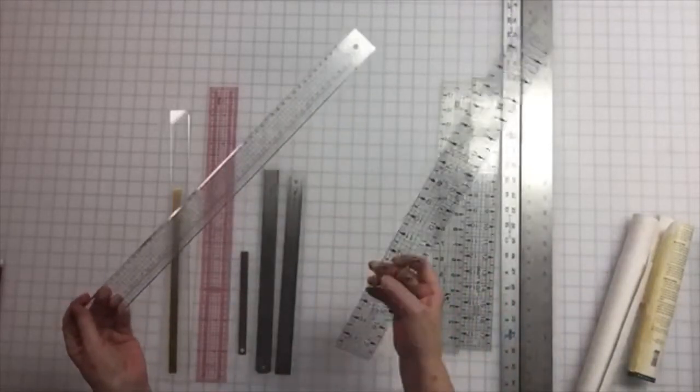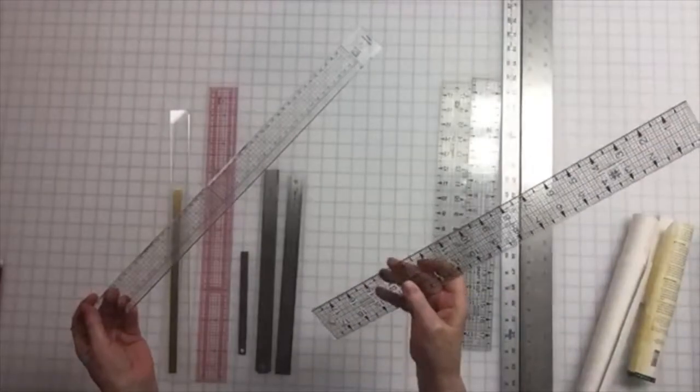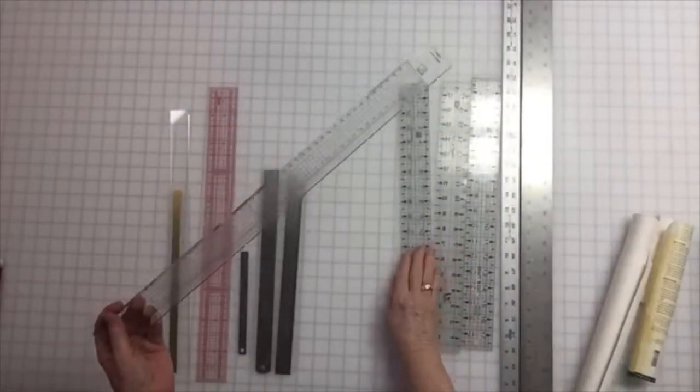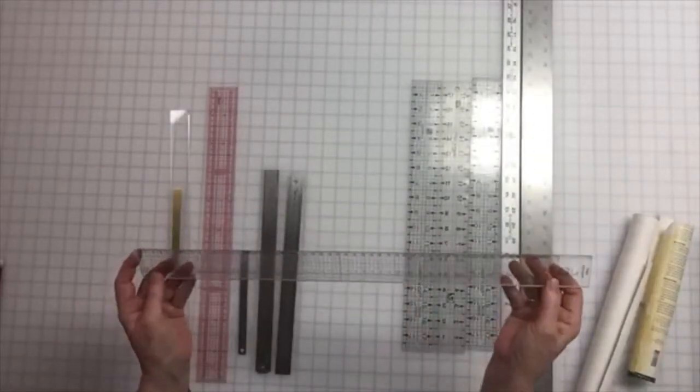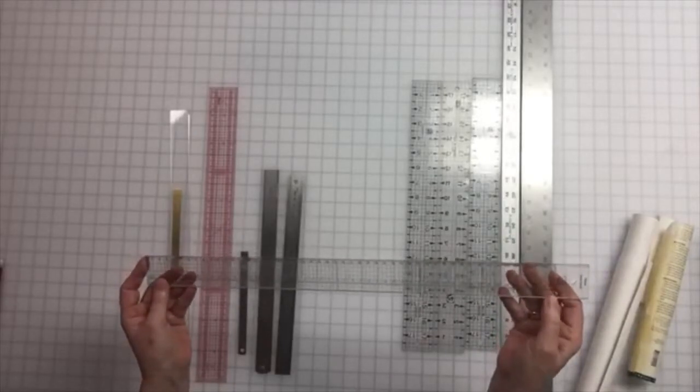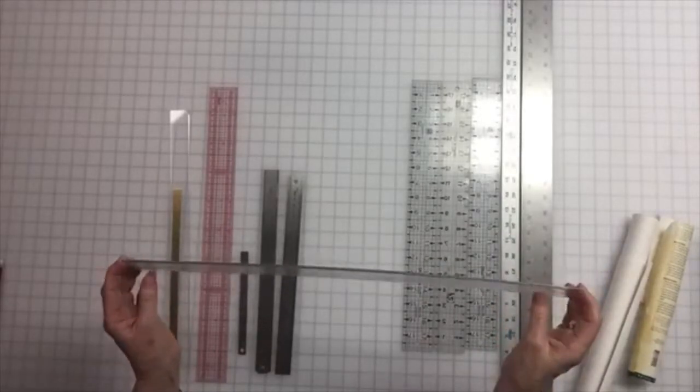It's marked every five millimeters, where this one is the equivalent of every three millimeters. This one is marked every five millimeters. This is a 50 centimeter ruler, a half a meter, super nice.